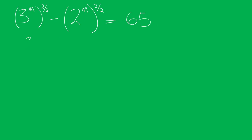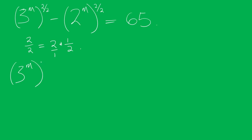Now, 2 divided by 2 is the same thing as 2 times 1 over 2. So replacing this value in these expressions, you now have 3 to the power of m, to the half times 2, minus 2 to the power of m, to the half times 2, equal to 65.